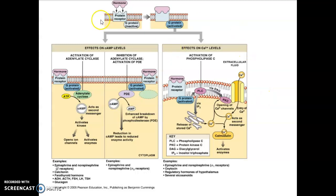Let's continue to look at the fixed membrane receptor mechanism, where the hormone is the first messenger. It triggers a cascade of events to create a second messenger, which we call amplification, because there's always more second messenger than first messenger. The outcome of fixed membrane receptors is either to activate enzymes — turning them on to lower the energy of activation.